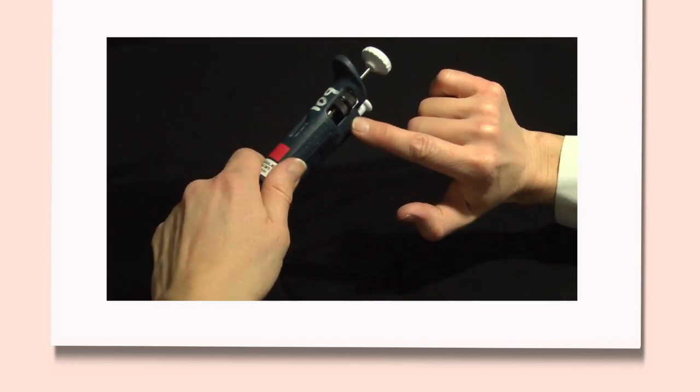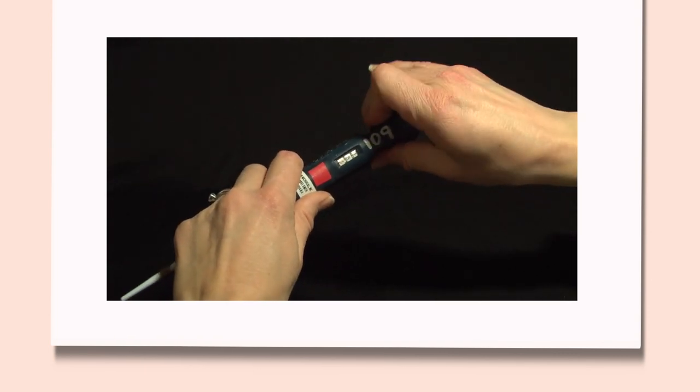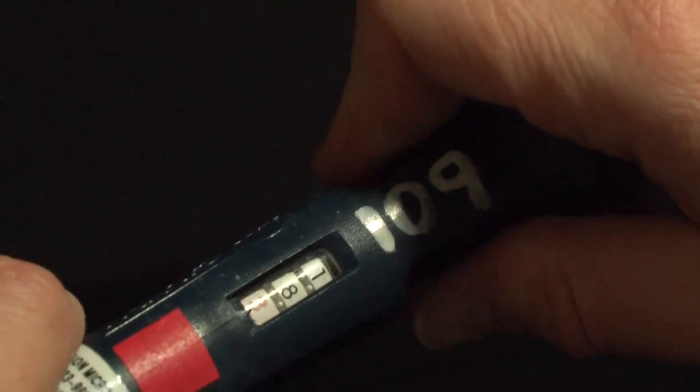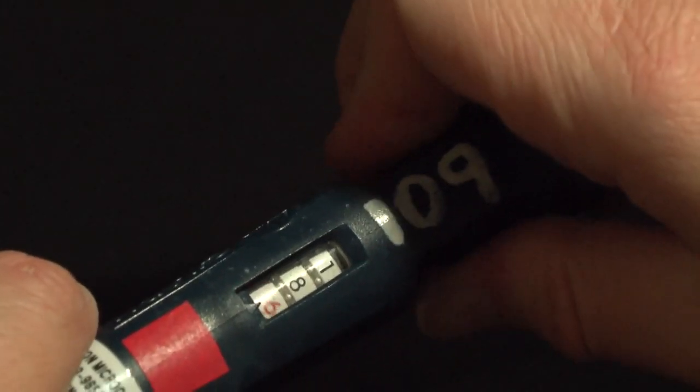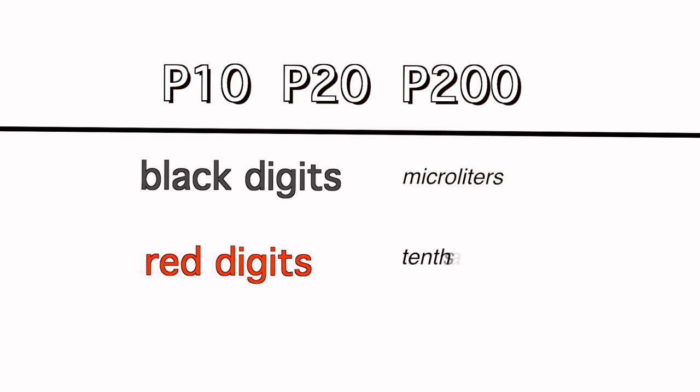Volumes are set using the black ring or top plunger knob. The volume to be dispensed is read on the indicator along the body of the pipetter. This volume indicator consists of three digits which are read from top to bottom. For the P10, P20, and P200, the black numbers refer to the number of microliters, and the red digits indicate tenths and hundredths of microliters.